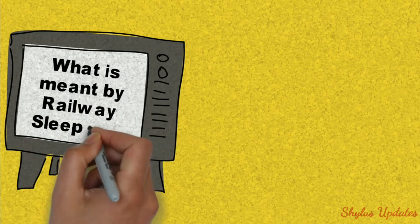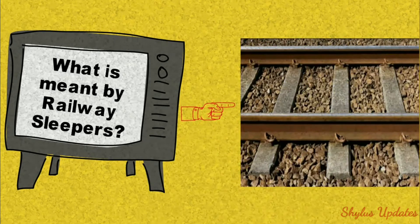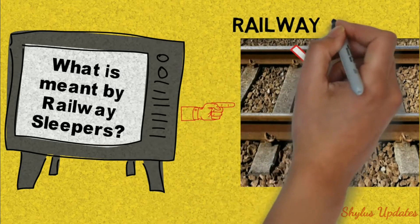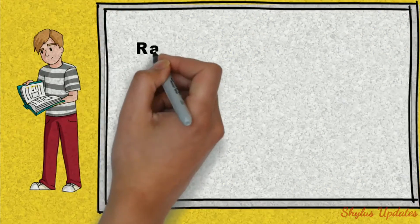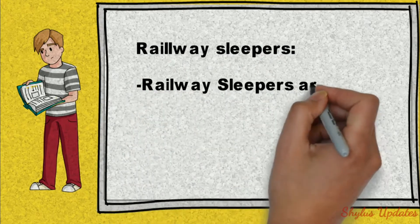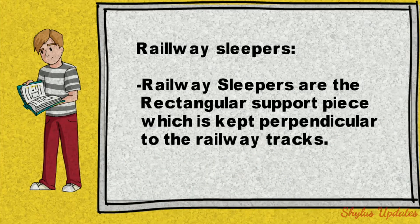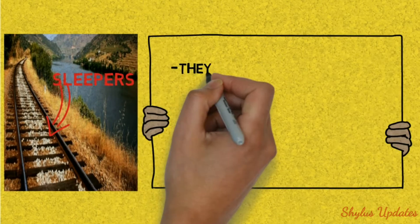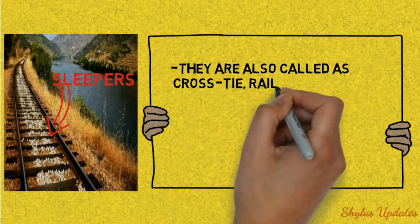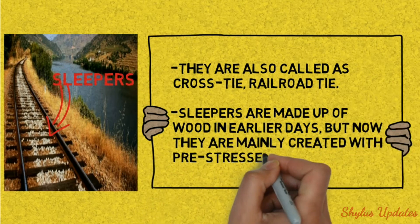What is meant by railway sleepers? Railway sleepers are the rectangular support pieces which are kept perpendicular to the railway tracks. They are also called cross-tie or railroad tie. Sleepers were made of wood in earlier days, but now they are mainly created with pre-stressed concrete.